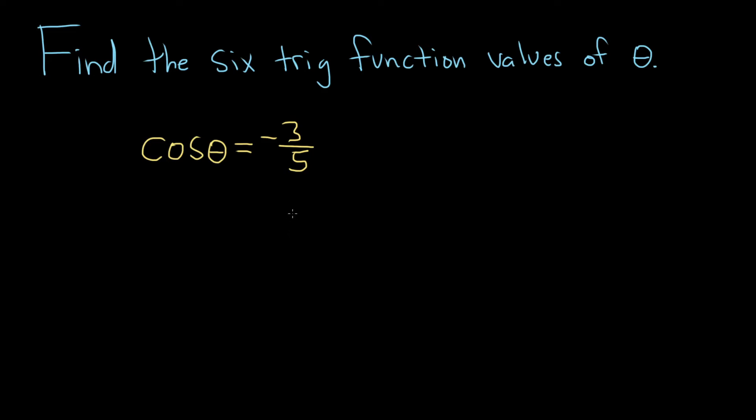In this problem, we have to find the six trig function values of theta, and we're told that the cosine of theta is equal to negative 3 over 5, and we're also told that theta is in quadrant 3.